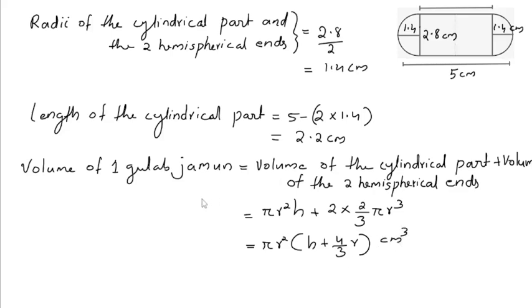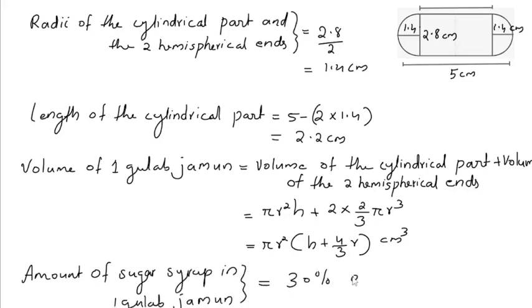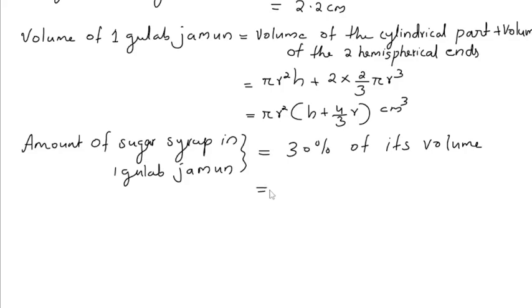One gulab jamun contains 30% of its volume of sugar syrup. This is equal to πr²(h + 4/3 r), which is the volume of one gulab jamun, multiplied by 30%. You can write as 30/100. We have to find the amount of sugar syrup in 45 gulab jamuns.